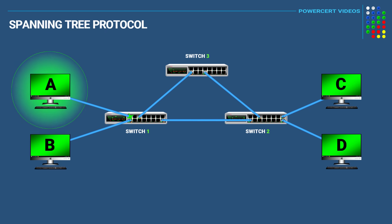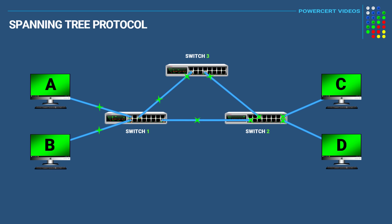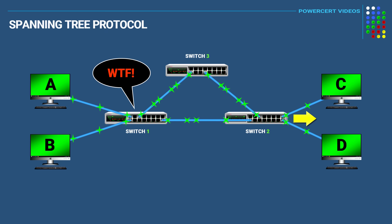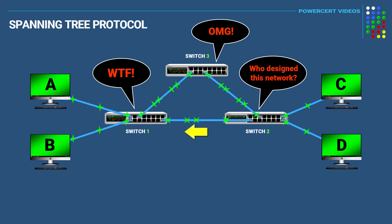Switch 1 will forward the broadcast to computer B, switch 2, and switch 3. When switch 2 receives the broadcast, it will forward it to computer C and computer D, but it's also going to forward it to switch 3. When switch 3 receives the broadcast, it'll forward it to switch 1, and switch 1 will forward the broadcast again to switch 2. This will continue on in a never-ending loop, and the same thing happens in the other direction — switch 3 forwards to switch 2, and switch 2 forwards back to switch 1, and it's rinse and repeat.